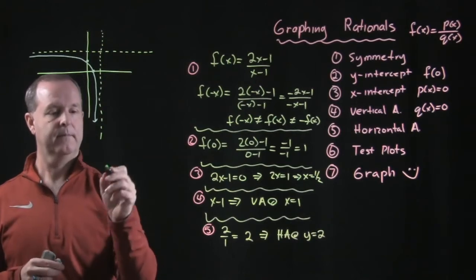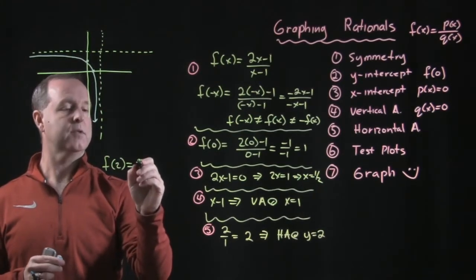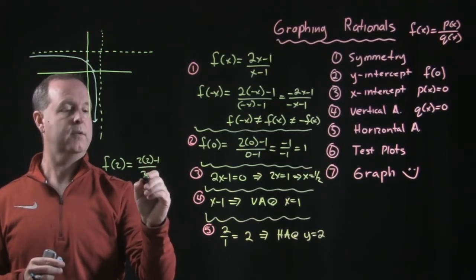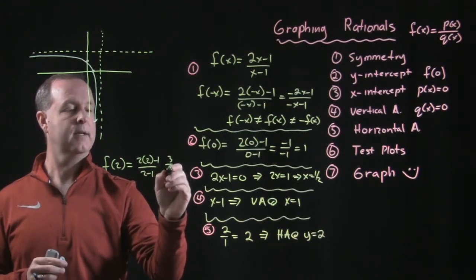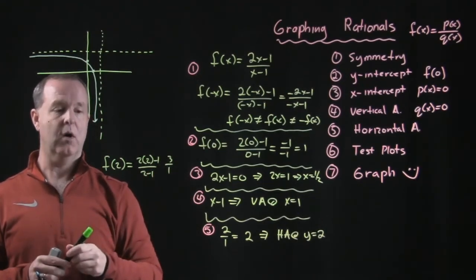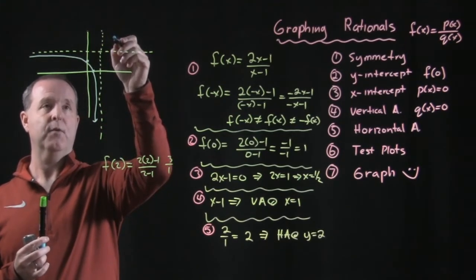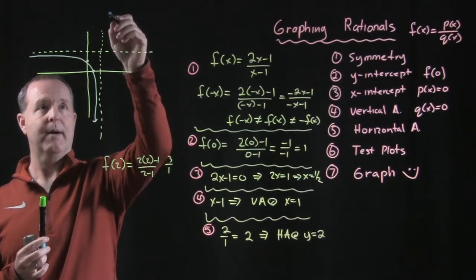Man, how do I want to do this here? f of 2 equals 2 times 2 minus 1 over 2 minus 1. That equals 4 minus 1 is 3. That's 3. So at the point x equals 2, my value is up here at 3.